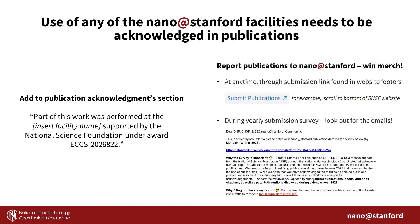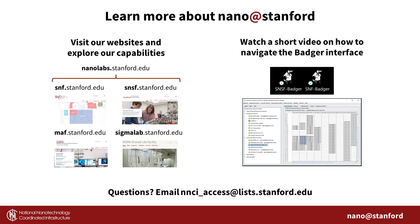For users who publish research with the aid of our tools, it is important to acknowledge the use of our facilities and the source of our funding from the National Nanotechnology Coordinated Infrastructure Program. It is also critically important to report your published work with us, as this is the main metric with which we measure our effectiveness. You'll also get a chance to win some Nano at Stanford merch. For any remaining questions, explore our capabilities online or email us at nnci-access-at-list.stanford.edu. Additionally, click through to watch a short video on how to navigate and use the Badger interface.